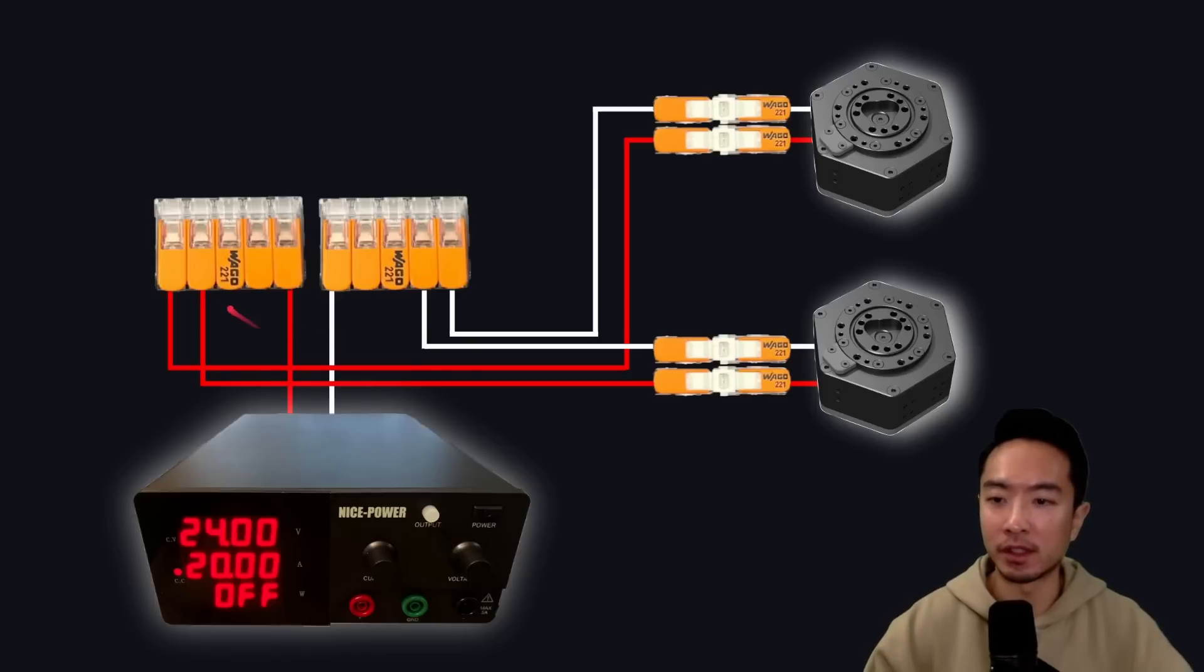You can see that I'm only using three of the five ports, but the idea is you want to take your power supply and get the red line connected to one of these five-port connectors. And then you're going to have two more red lines coming out of the five-port connector and going to the red line of the motors.